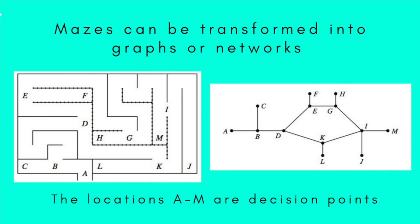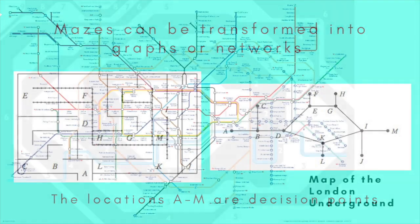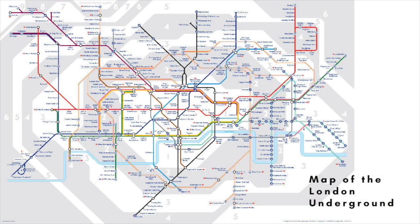If a maze is shown as a network, in other words as a series of points connected by lines, it's easy to see the solution, the best way to get from the entrance to the centre.